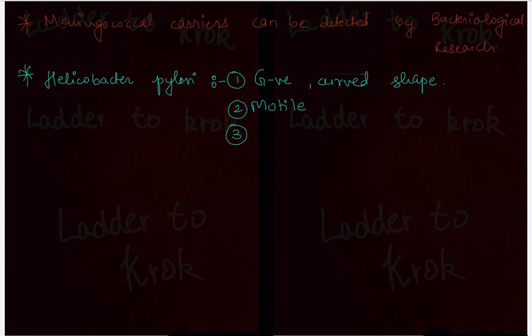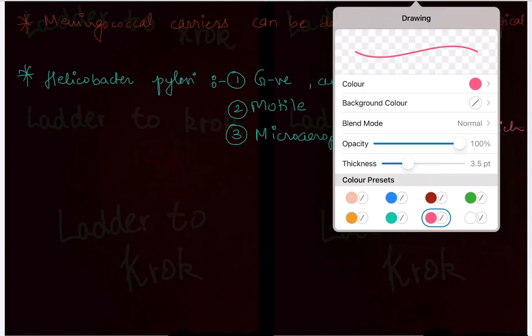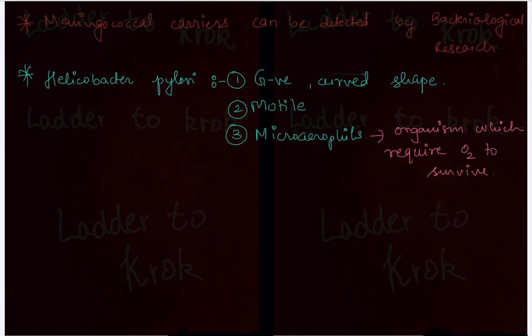Third point you should know is that they are microaerophils or they are microaerophilic. Now what does this microaerophils mean? Means the organisms which require oxygen to survive. So Helicobacter pylori needs oxygen for its survival.